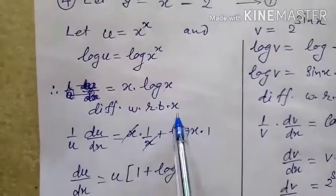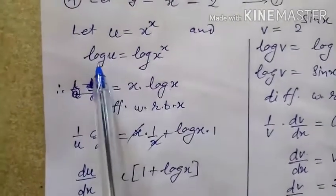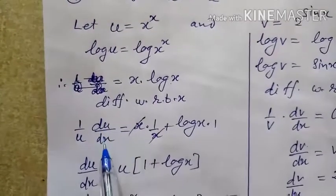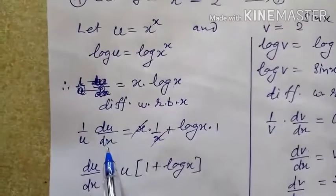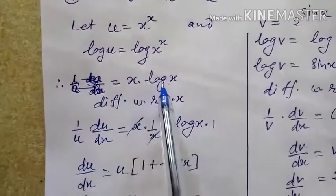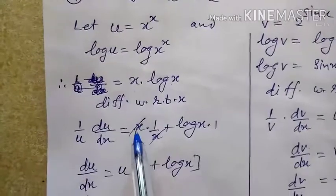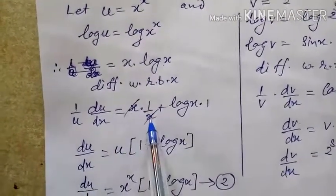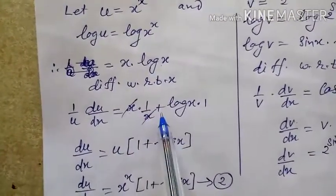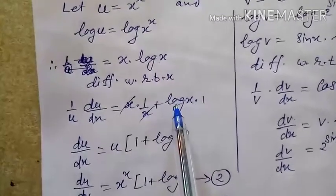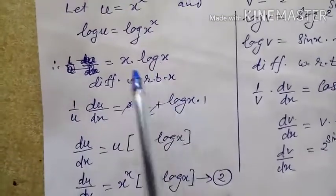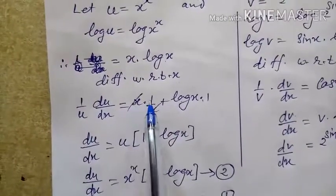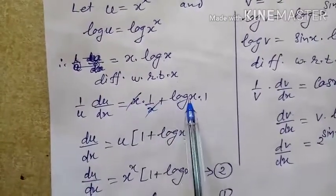Now differentiate with respect to x. The differential of log u is (1/u) · du/dx. Here we have first function x and second function log x. By the product rule: first function as-is times differential of second, which is 1/x, plus second function log x as-is times differential of x, which is 1. The x cancels, leaving 1 + log x.